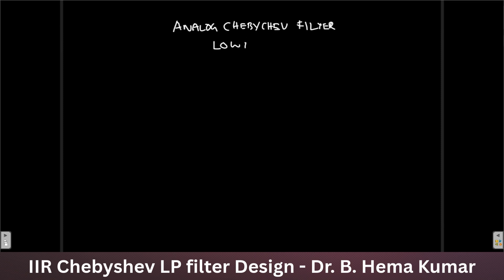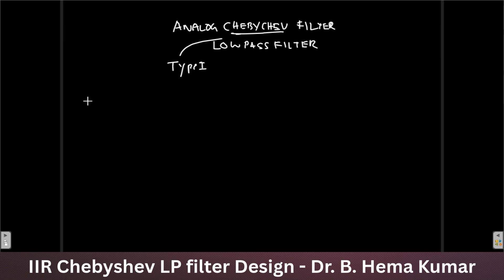Today we are going to see about analog Chebyshev filter design. Particularly, we are designing a low-pass filter. In previous sessions we have seen how to design a Butterworth filter, so there will be slight variation with respect to the Chebyshev filter. Here we are going to see a Type 1 Chebyshev filter. We will start directly with a sample problem and along the way cover the different formulas required.